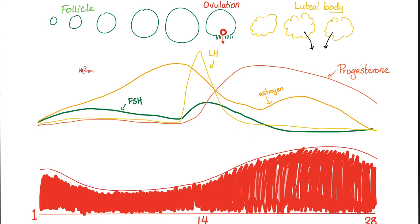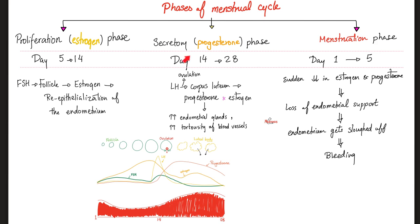After ovulation, luteinizing hormone will leave the chat. In the second half of the cycle, the hero is progesterone — and some estrogen. Progesterone maintains the endometrium of the uterus to sustain the baby; hopefully there is a zygote. Who made the progesterone? The corpus luteum — the follicle remnant after you get the ovum out. The remainder of the follicle after ovulation is known as the corpus luteum. Then come the proliferation phase, secretory phase, and menstruation phase. Menstruation is bleeding — because after the second half, estrogen and progesterone drop, no one sustains the endometrium, it sloughs off, causing menstrual bleeding every 28 days.